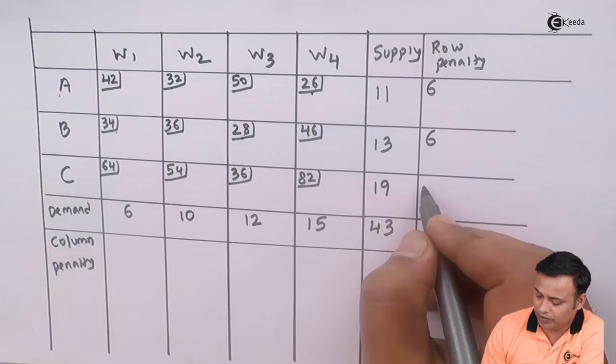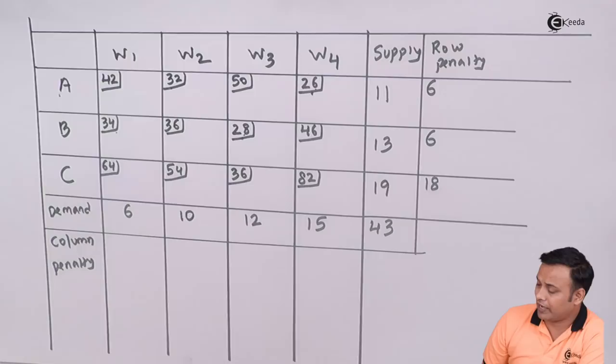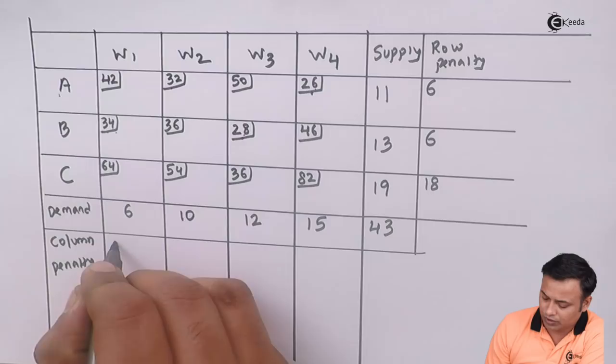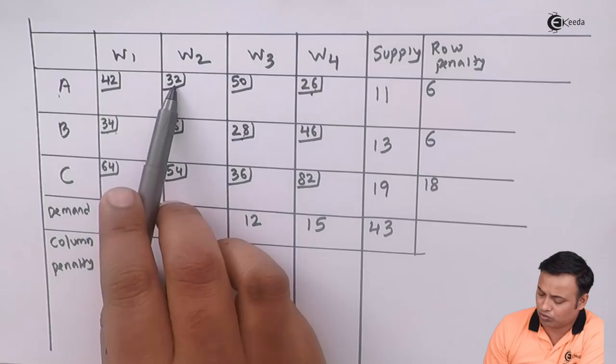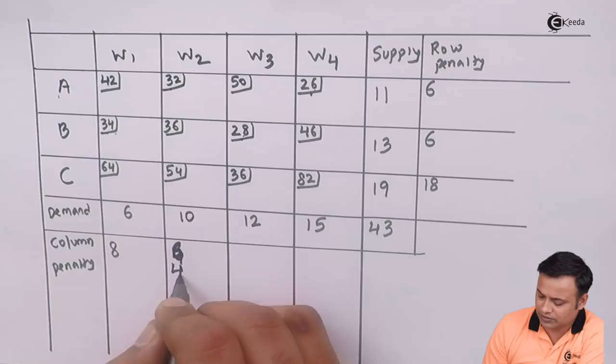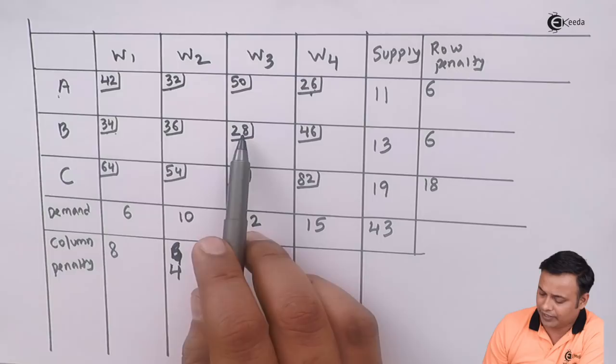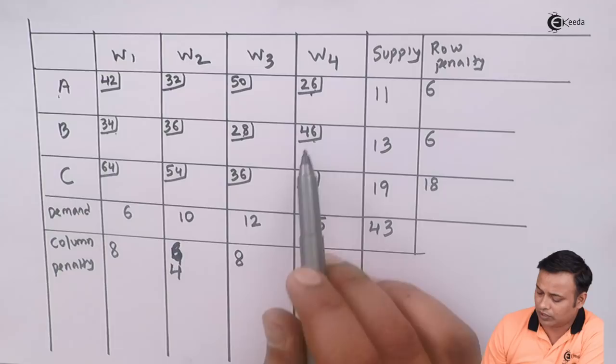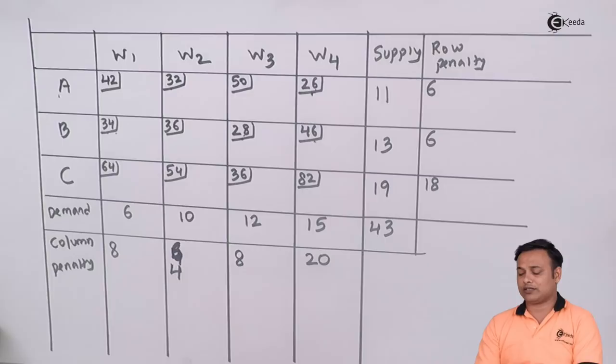And my next lowest cost is 54. The difference between the two will be 18. What we did row-wise, we are going to do the same thing column-wise. This is the first column. The lowest number is 34, next lowest is 42, the difference is 8. The second column, lowest number is 32, next lowest is 36, difference is 4. Third column, lowest cost is 28, next lowest is 36, difference is 8. And last column, lowest cost is 26, next lowest is 46, difference is 20.